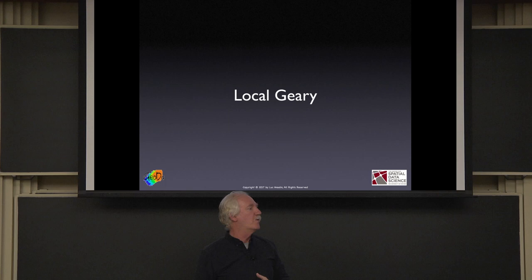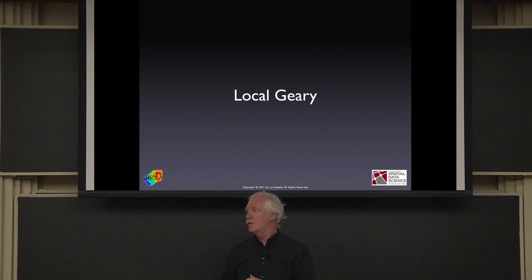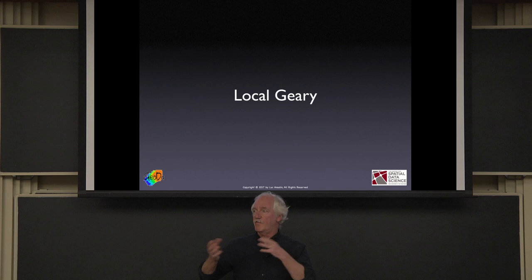Local Moran is straightforward: you decompose the numerator of the Moran I statistic, carry out conditional permutation analysis to find significant locations, and then classify them using information embedded in the Moran scatter plot — which in GeoDa is done behind the scenes.